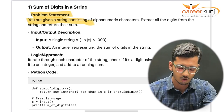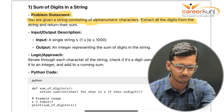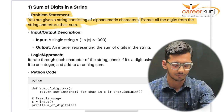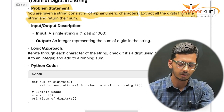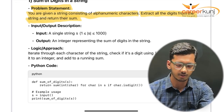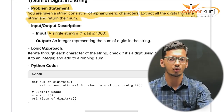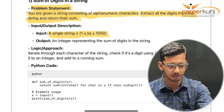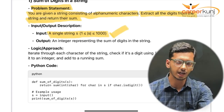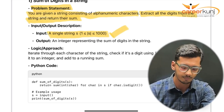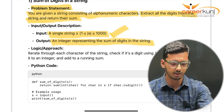You are given a string consisting of alphanumeric characters. Extract all the digits from the string and return their sum. The input is a single string with length between 1 and 1000. Please note there are no negative numbers in this. The output is an integer representing the sum of digits in the string.